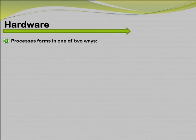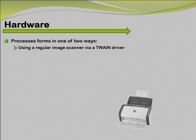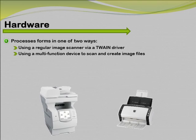You can process your forms in Remark Office OMR in one of two ways. You can use a regular image scanner via a Twain driver, or generate image files with a network multifunction machine. Using the software's read wizard, you can then pull these images from your network to collect the data. The information you collect appears just as if it were scanned directly with an image scanner.